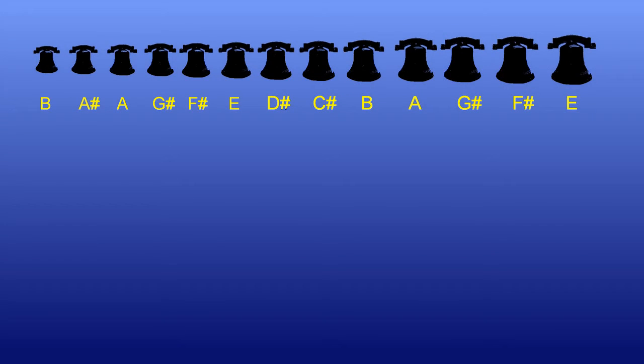And this is where the extra bell comes in. The scale of B contains the note A sharp, which is the note of the extra bell. Because it's higher in pitch than the normal second bell, it's called a sharp second.